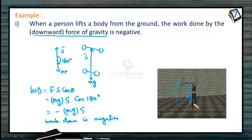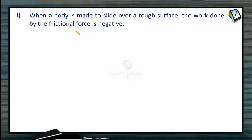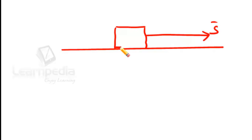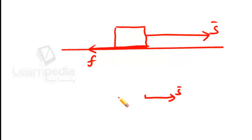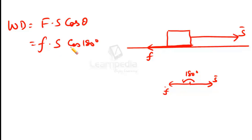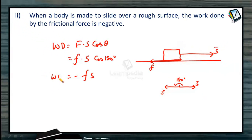Work done by the gravitational force when the body is lifted up is always negative. When a body is made to slide on a rough horizontal surface, work done by the friction force is negative. We apply a force to move the body, but as it moves on the rough surface, friction acts in the backward direction. Work done = friction force × displacement × cos 180° = −F·s.